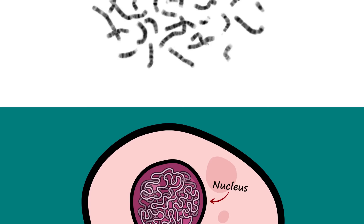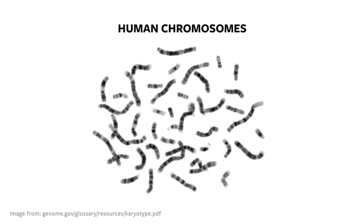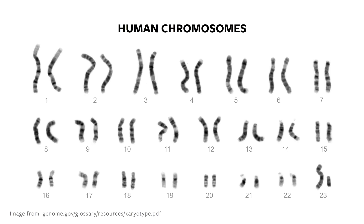Here is a photograph of an entire set of human chromosomes taken from a cell right as it was getting ready to reproduce. Your genome — the entire collection of genes that help make you who you are — are written across 23 pairs of chromosomes; that's 46 altogether.